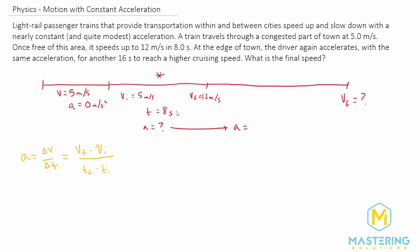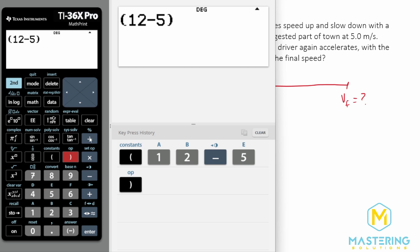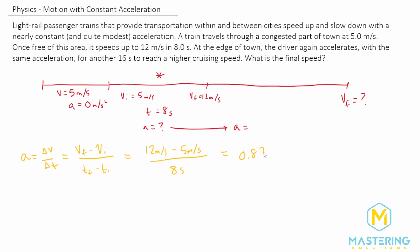In this case, the delta T is given as 8 seconds. So now we can plug in the final velocity, which is 12 meters per second minus 5 meters per second, divided by the whole time, which is 8 seconds. So we have 12 minus 5 divided by 8, which gives us 0.875 meters per second squared.